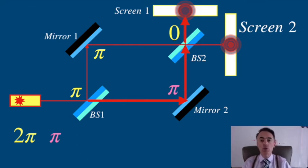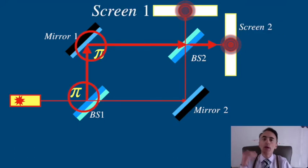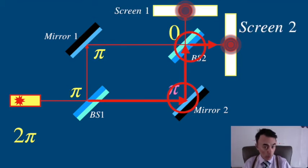Light going to the other screen via the top path experiences two reflections with a total of two pi phase shift. Light going to the other screen via the low path experiences also two pi phase shift. This will lead to a pi phase shift between screen one and two.